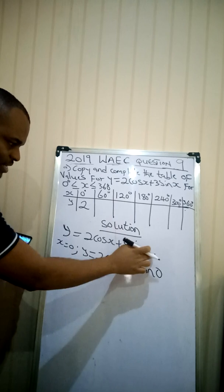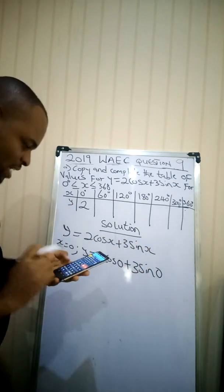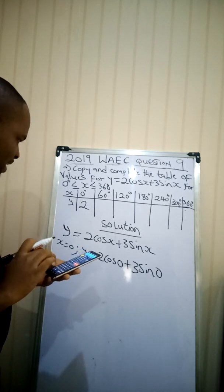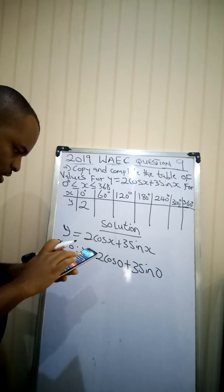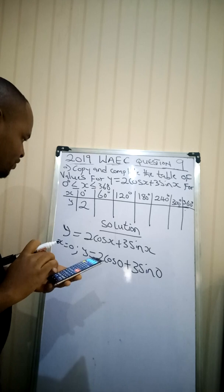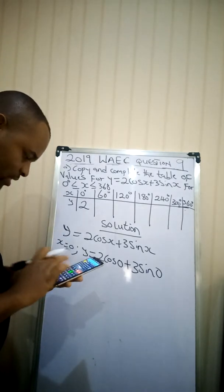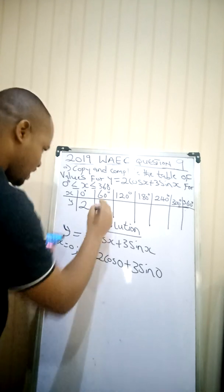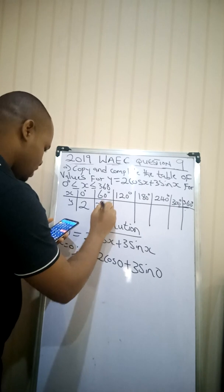Repeat the same thing for 60. Put the value of x as 60 in this equation to get your value of y. So quickly we just do that. I'll be having 2 multiplied by cos(60) plus open bracket of 3 multiplied by sin(60). Close your brackets. Equal to. I have this as 3.60 to 2 decimal places.